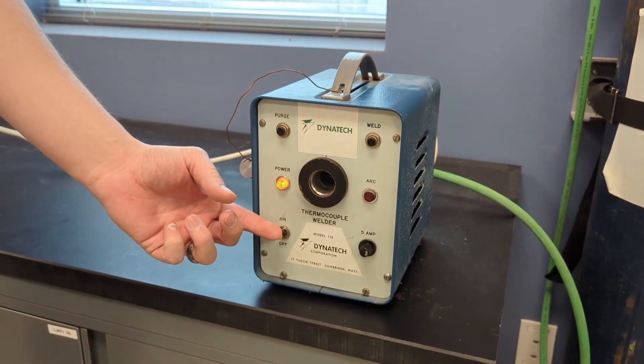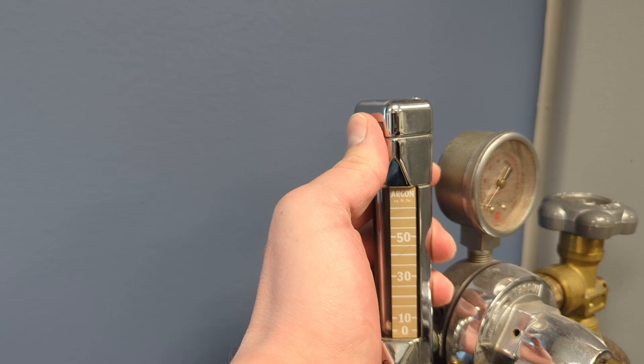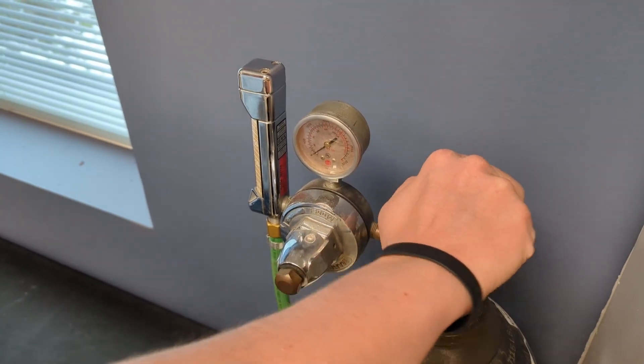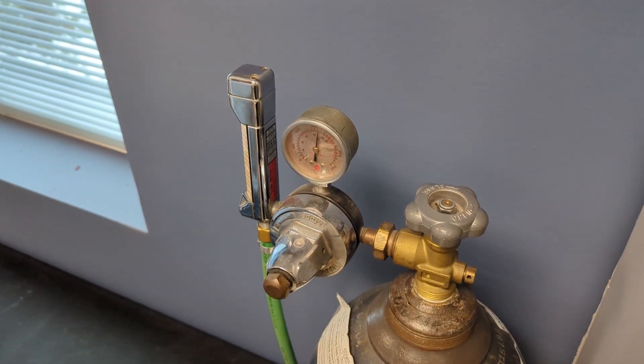Power on the welder. Open the argon gas flow control by turning the dial counterclockwise. 3-4 turns should suffice. Turn the control valve on the argon gas a quarter turn counterclockwise.